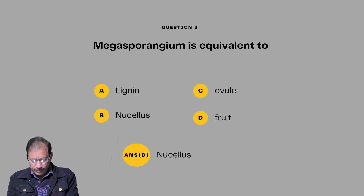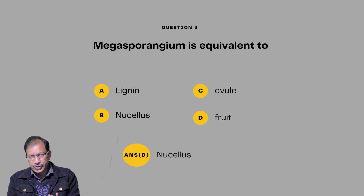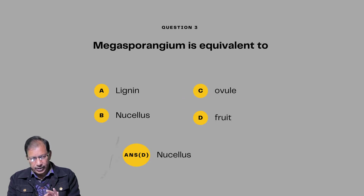Question number three: Megasporangium is equivalent to what? Options are embryo, nucellus, ovule, or fruit. So, megasporangium is equivalent to the nucellus.